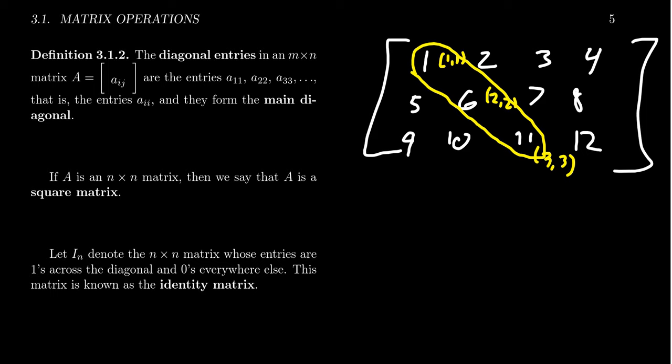Another vocabulary term: if a matrix has as many rows as columns — so it's an n by n matrix — we say it is a square matrix. That's because when you draw it, you have the same number of rows and columns, so it looks like a square.